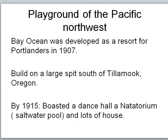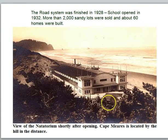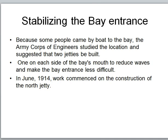Potter proposed building a resort in 1907 on that spit, and by 1915 it boasted some pretty amazing development. There were plans for a grand hotel, and there was a natatorium — an indoor swimming pool with seawater. They had a school, 2,000 lots were sold, and 60 homes were built. But because the highway was so dangerous and unreliable, sometimes boats would come into Tillamook Bay, and so people contracted with the Corps of Engineers to work out an engineering solution.